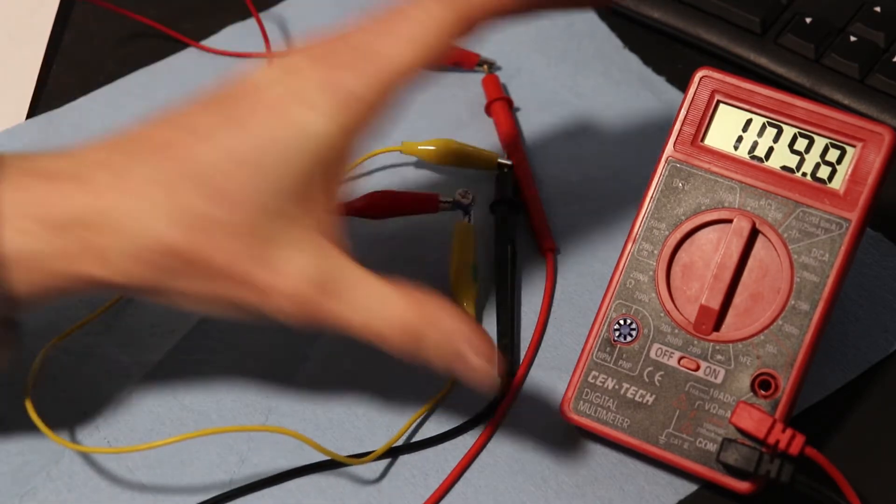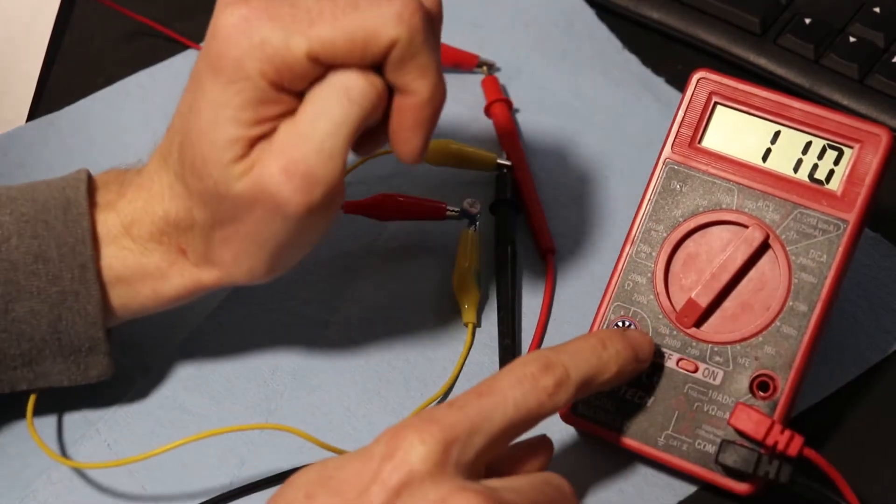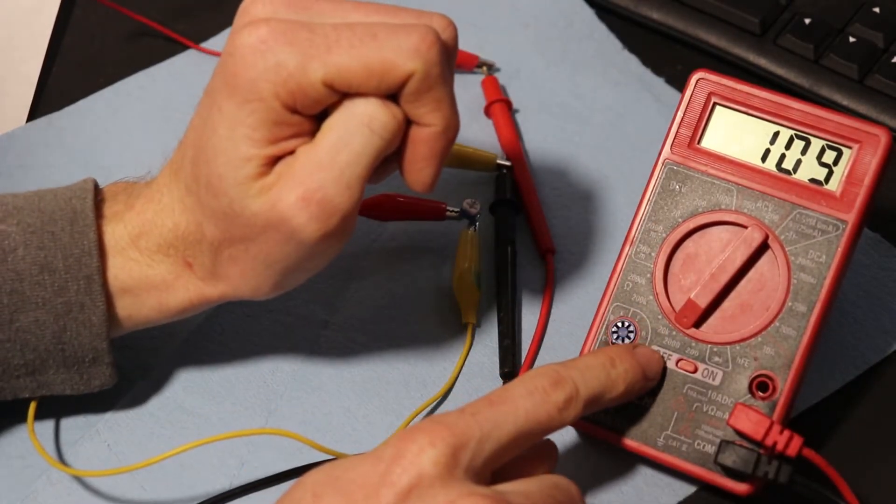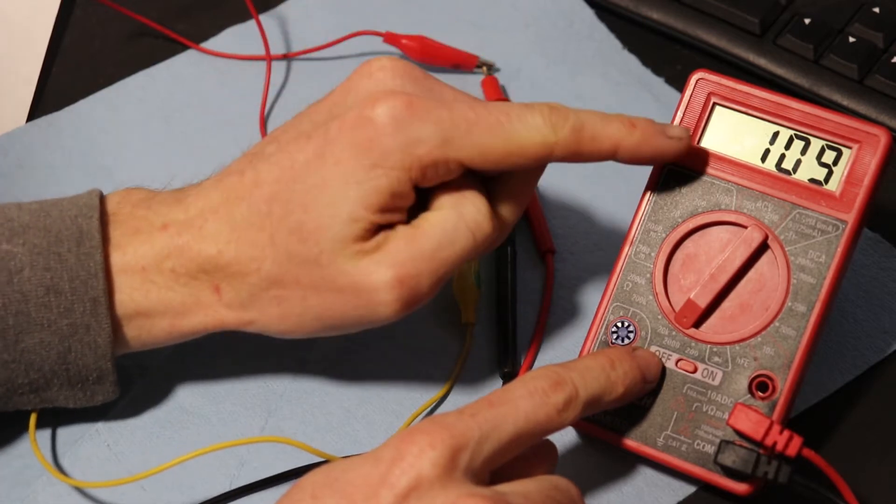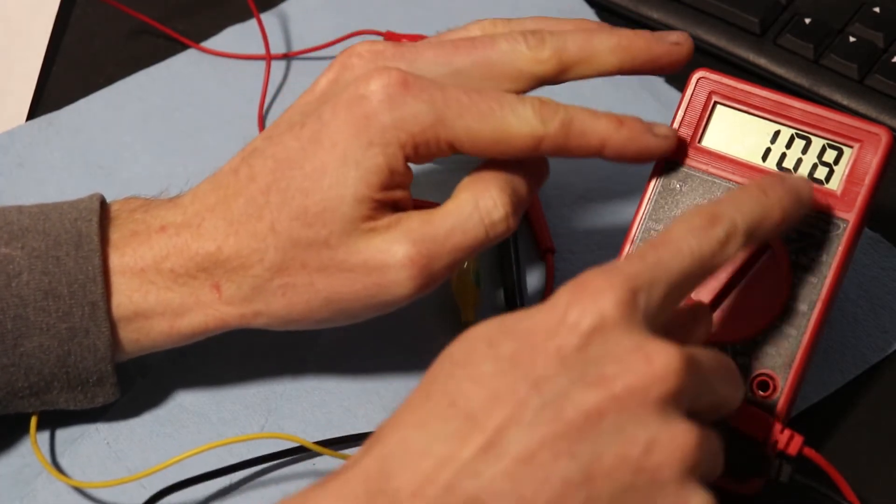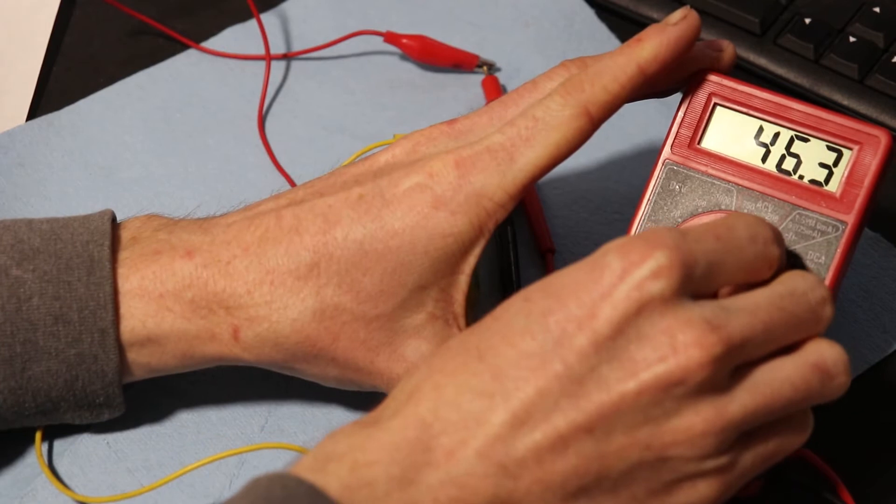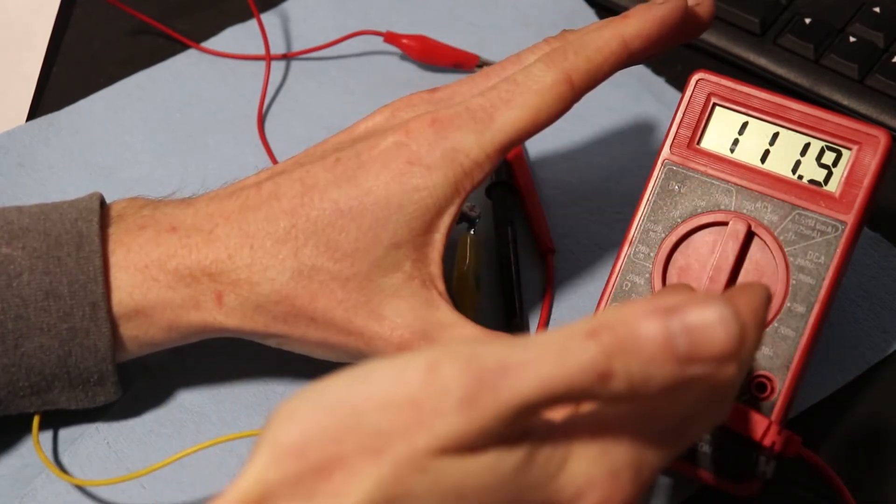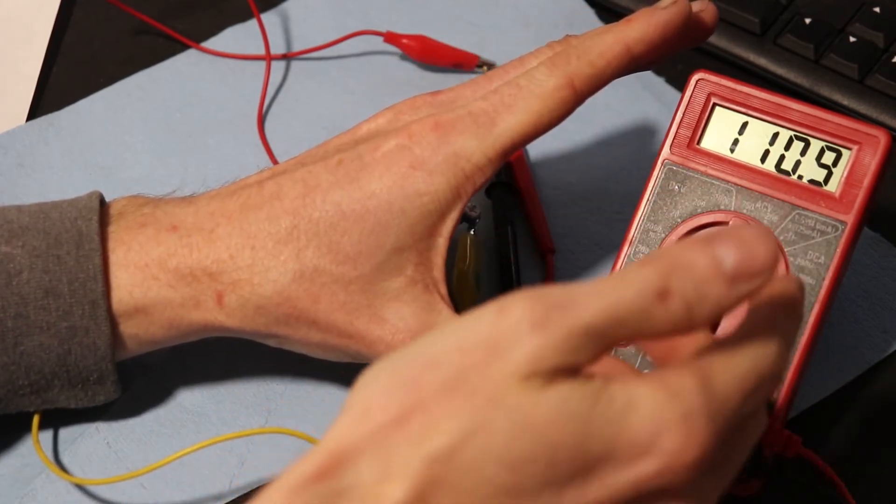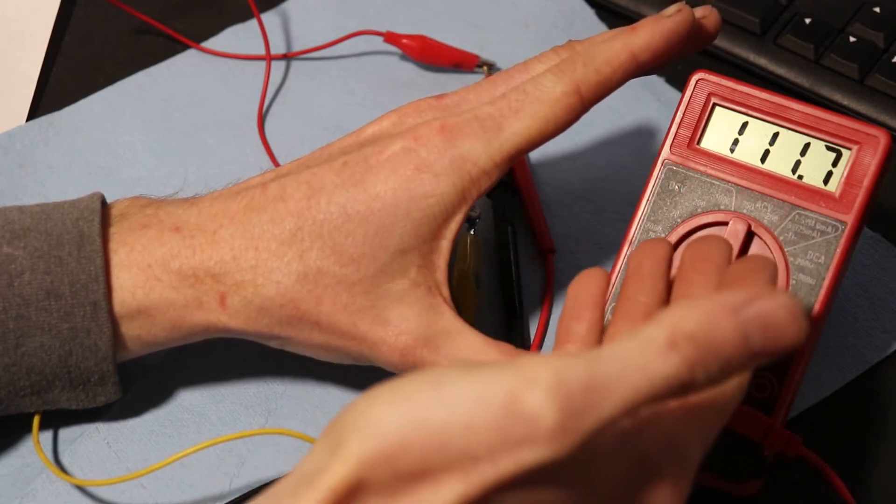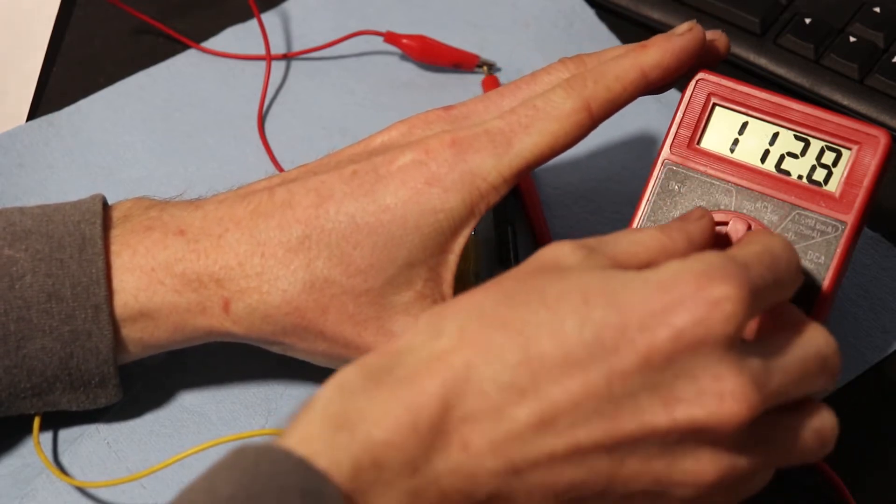But if I try to go to the 2000 setting, all that happens is I lose one decimal precision. So before it kind of takes a second to equalize back out, you can see that the reading is somewhere around 110.